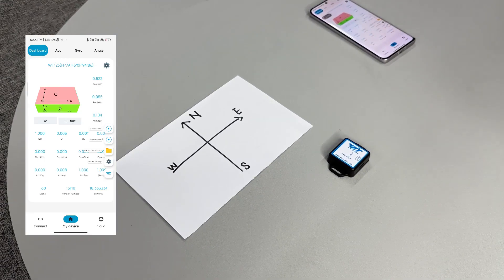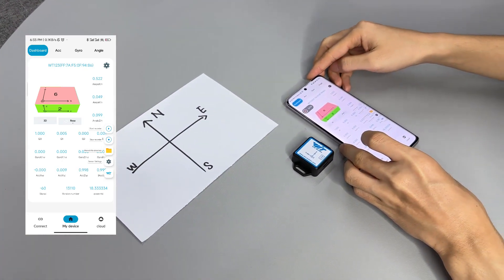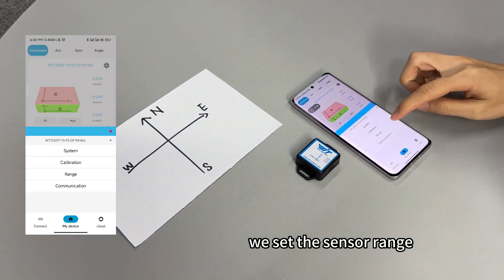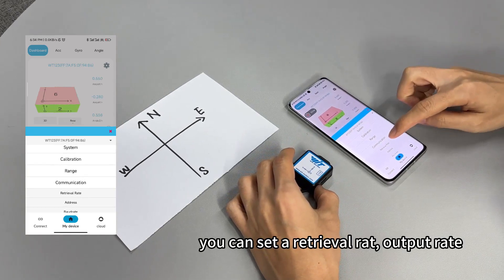And now we are going to introduce our next functions. We set the sensor's range, and this will depend on—we go to the communication. You can set the output rate.